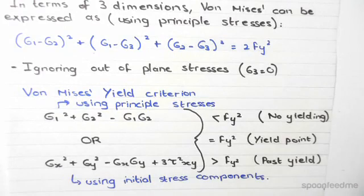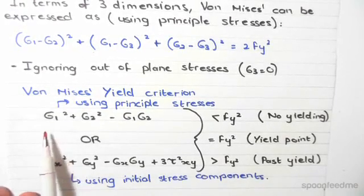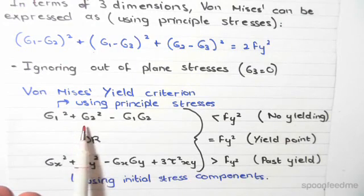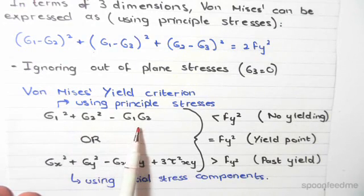We can put it in terms of the principal stresses. It becomes principal stress 1 squared minus principal stress 2 squared minus the product of principal 1 times principal 2.